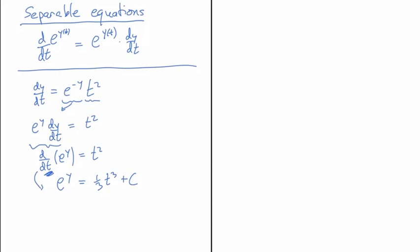So now we have a solution: y equals the natural log of one-third t cubed plus c. That plus c has to be inside the brackets — this is not a straightforward antiderivative where you just add c at the end. In differential equations, the constant gets mixed into the function in a more complicated way almost always.